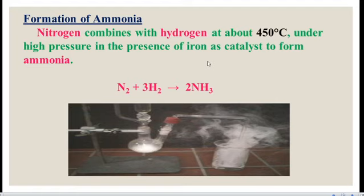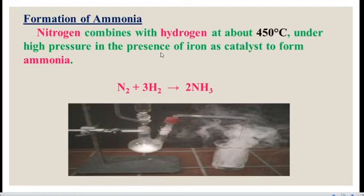Formation of ammonia: nitrogen combines with hydrogen and produces ammonia. This reaction takes place at 450 degrees Celsius under high temperature and pressure, and it happens in the presence of iron which acts as a catalyst. A catalyst is a chemical substance which initiates the reaction or controls the speed of the reaction. Iron acts as a catalyst and the reaction takes place at high temperature and pressure. Nitrogen and hydrogen combine to produce ammonia, so this is also an example of a combination reaction.